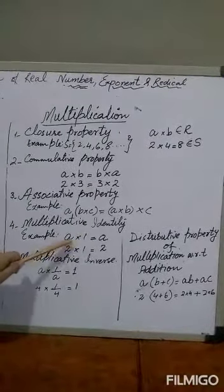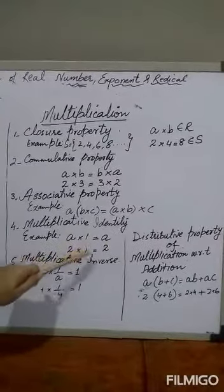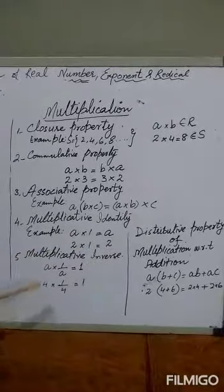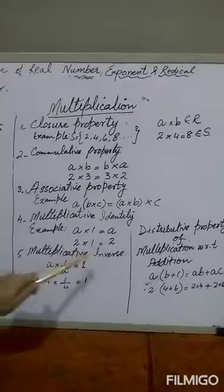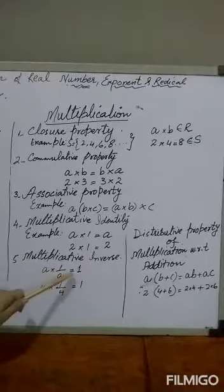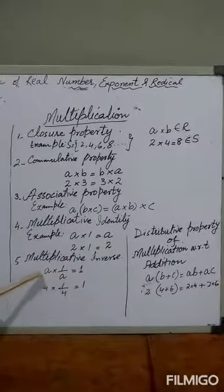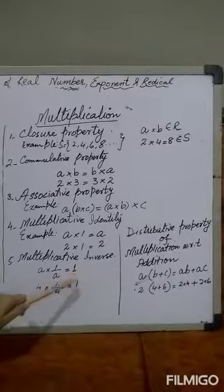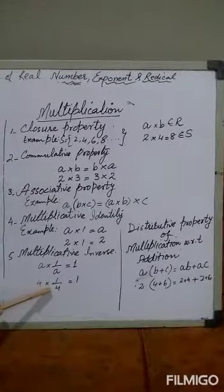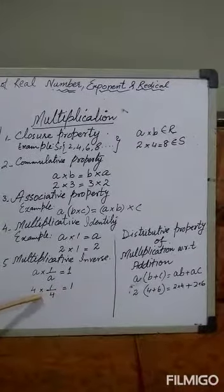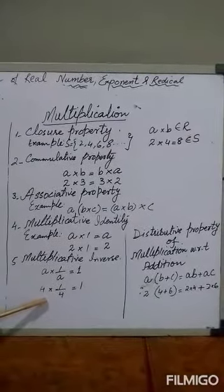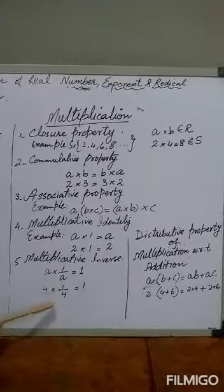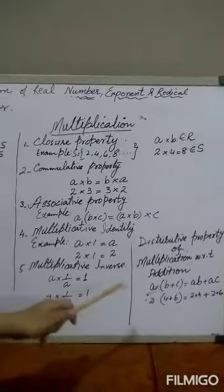Fourth is the multiplicative identity: A times 1 equals A. For any real number, multiplying by 1 gives the same answer — so 1 is the multiplicative identity. Fifth is the multiplicative inverse: A times (1/A) equals 1. So 1/A is the inverse of A. For example, the multiplicative inverse of 4 is 1/4, the multiplicative inverse of root 2 is 1/root 2, and the multiplicative inverse of 7 is 1/7. Their product is always equal to 1.